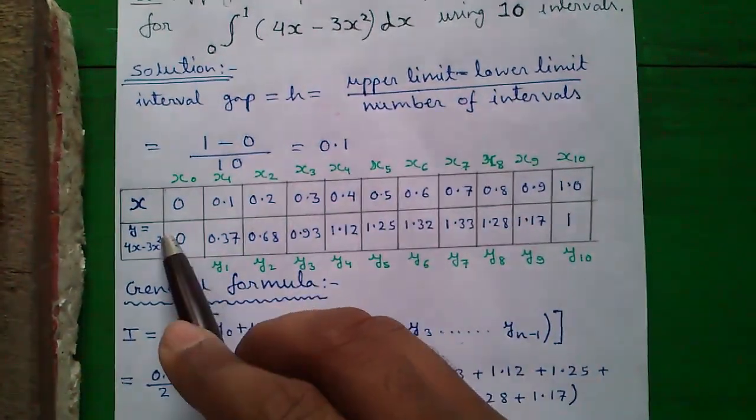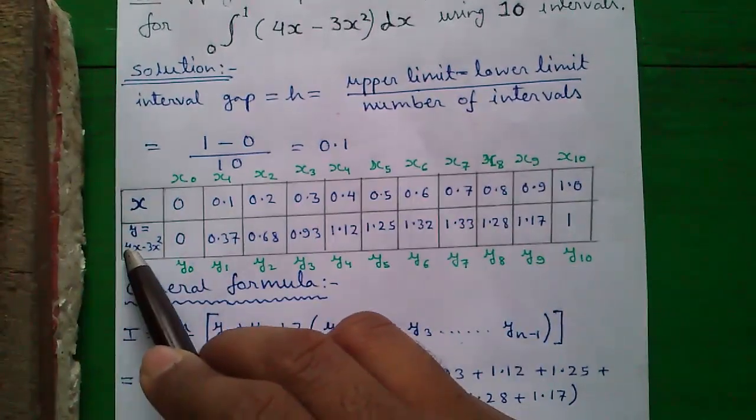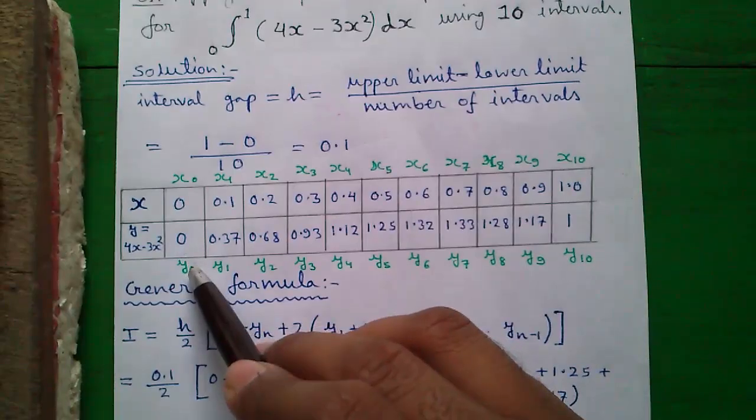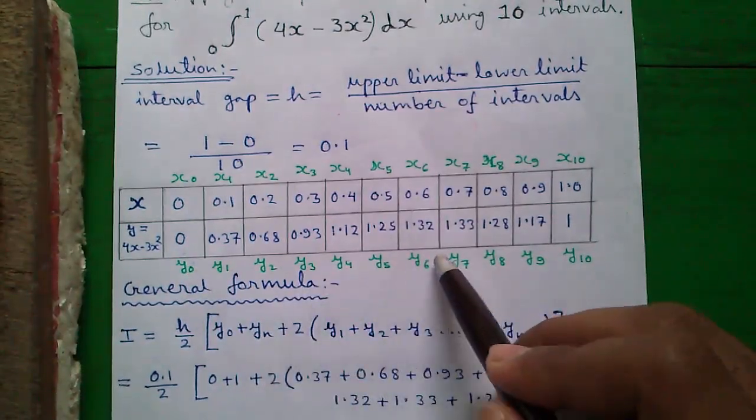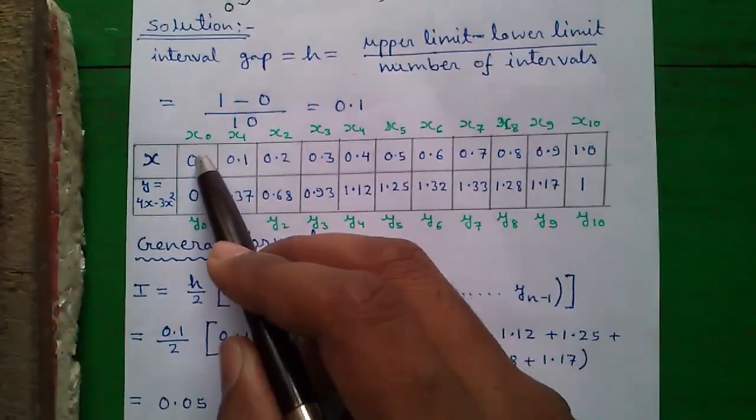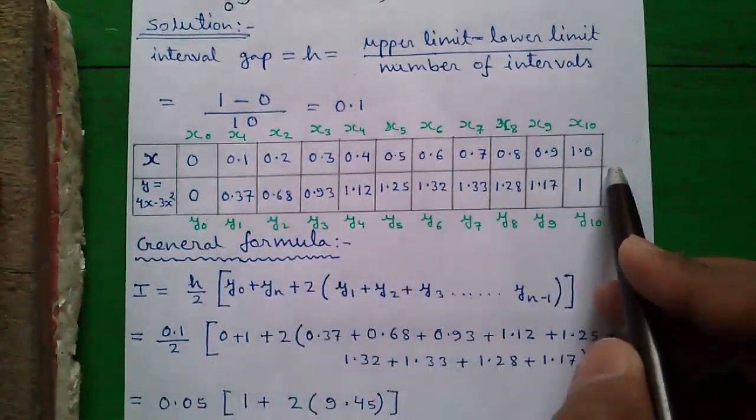And the lower row is called y row, y equals to 4x minus 3x square, our expression. And the first value is called y0, then y1, y2 up to yn that is up to interval value, here interval is 10. Next you have to find out the values in y row.